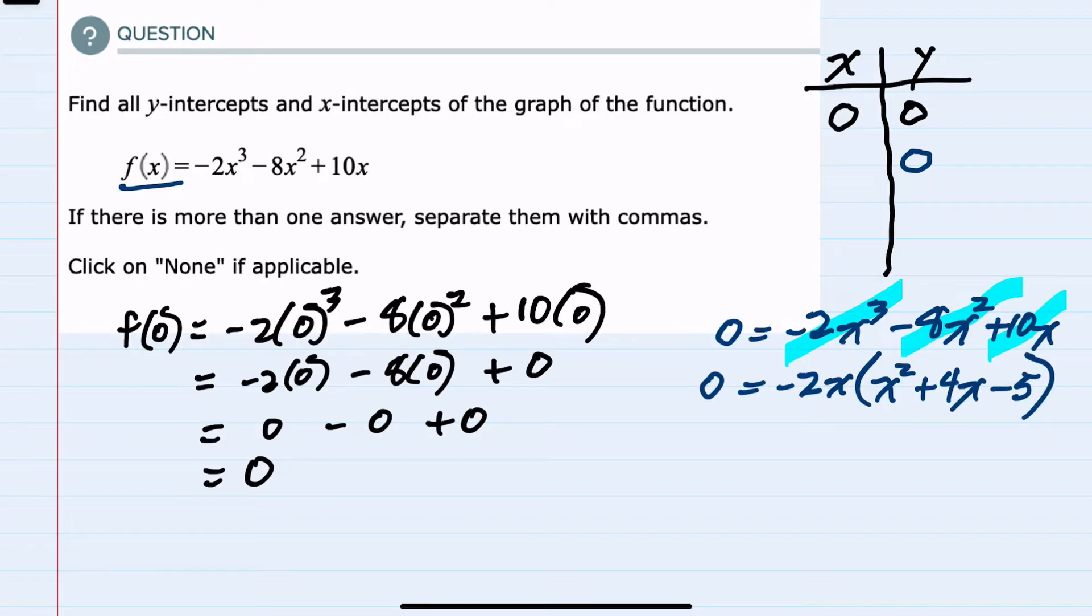So we have factored out the greatest common factor and I can continue by factoring the quadratic in the parentheses. Since this is x² it would factor if possible into x and x. My c term is minus 5 so my terms have to multiply to be minus 5 but add up to 4x.